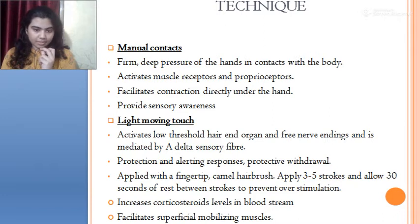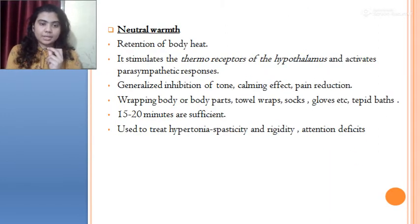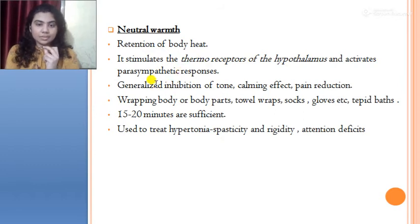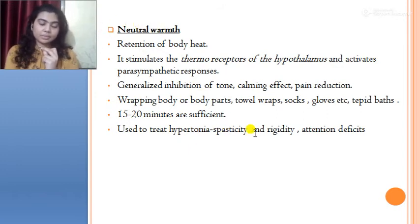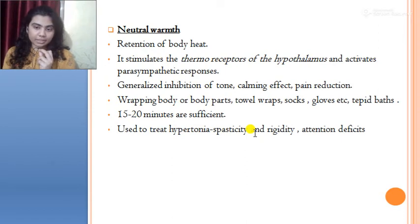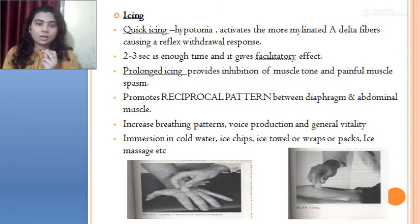Light moving touch increases corticosteroid levels in the bloodstream and facilitates superficial mobilizing muscles. Neutral warmth involves retention of body heat; it stimulates the thermoreceptors of the hypothalamus and activates parasympathetic responses, causing generalized inhibition of tone, a calming effect, and pain reduction. It is done by wrapping body parts with a towel or wraps for 15 to 20 minutes and is used to treat hypertonia, spasticity, rigidity, and attention deficits. It is linked with the hypothalamus and limbic system, making it useful in autism and ADHD rehabilitation.